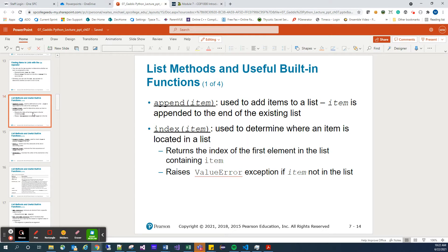We can also append items to a list. This is used to add items to a list. It's appended to the end of the existing list. We can use index item to determine where an item is located in a list. So as we were doing before where we were using a specific index to get to an item in a list, we can show an item and this index will tell us where that exists in the actual list.